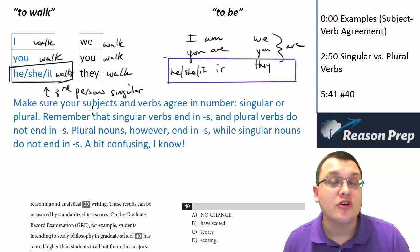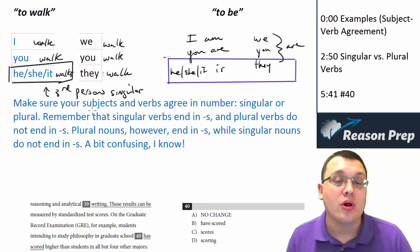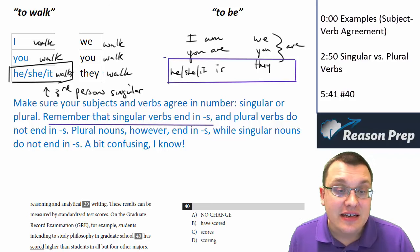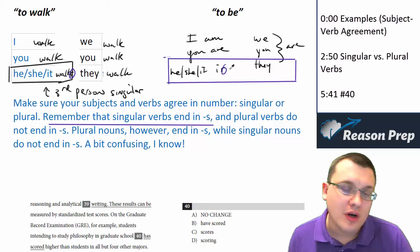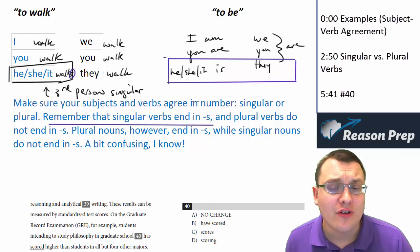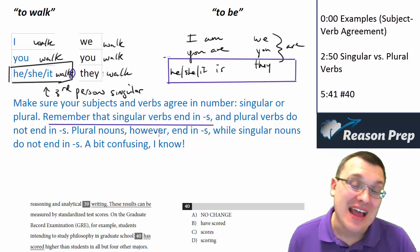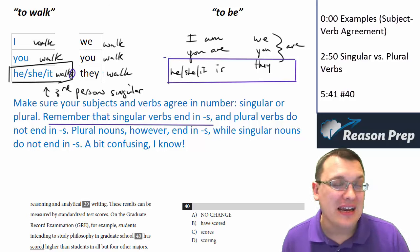So make sure that your subjects and verbs agree in number, they're singular and plural. And remember the confusing part. Singular verbs end in S, as we see here, walks. Well, is is kind of like that. But singular verbs, particularly regular verbs, end in S. But plural verbs do not end in S. It's just walk. Plural nouns, however, end in S, while singular nouns do not end in S. It's a bit confusing.